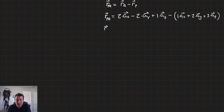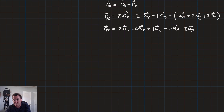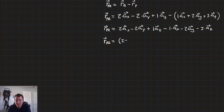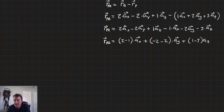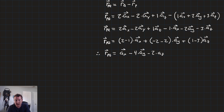From here it's just algebra. Distributing the negative sign gives us minus 1 times a_x, minus 2 times a_y, minus 3 times a_z. Using the distributive property to collect unit vectors: (2 minus 1) times a_x, plus (negative 2 minus 2) times a_y, plus (1 minus 3) times a_z. So our final vector connecting P and Q is equal to 1 a_x minus 4 a_y minus 2 a_z.